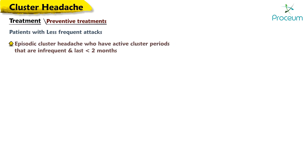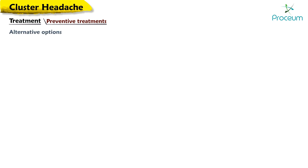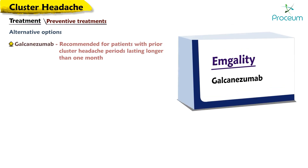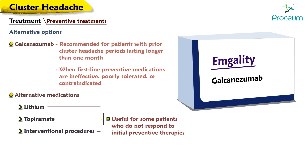For patients with episodic cluster headache who have infrequent active cluster periods lasting less than two months, clinicians suggest initial preventive therapy with glucocorticoids alone. Oral prednisone 60–100 mg once daily for at least five days followed by a taper with dose reduction of 10 mg daily is recommended. Alternative options include galcanezumab, which is recommended for patients with prior cluster headache periods lasting longer than one month when first-line preventive medications are ineffective, poorly tolerated, or contraindicated. Other alternatives such as lithium, topiramate, and interventional procedures may be useful for patients who do not respond to initial preventive therapies.